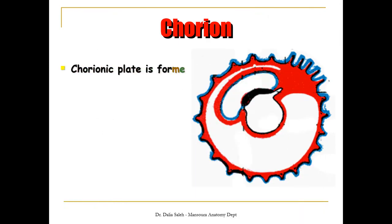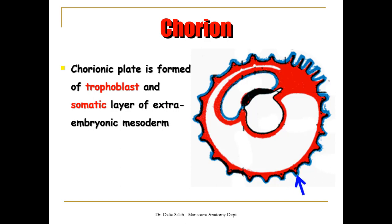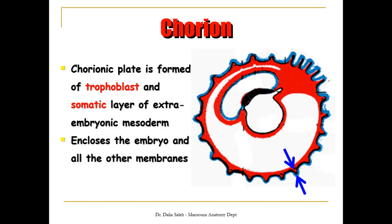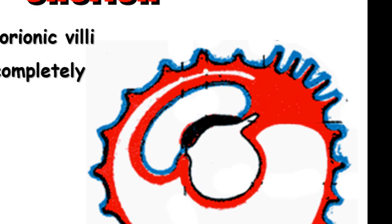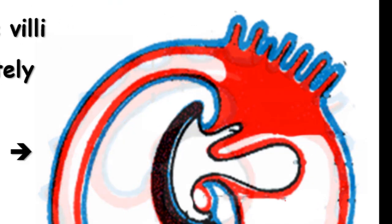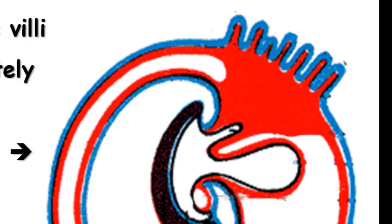The second membrane is the chorion. The chorion or chorionic plate is formed of the trophoblast and the somatic layer of the extra-embryonic mesoderm, and it is the outermost covering of the embryo. It includes both the embryo and also the other membranes like the amnion, yolk sac, and allantois. At first, the chorion develops finger-like extensions called chorionic villi that cover the sac completely. The villi over the decidua capsularis degenerate and form a smooth layer called chorion laeve, while the villi over the decidua basalis form the chorion frondosum, which shares in the formation of the fetal side of the placenta.